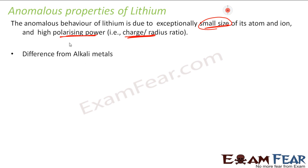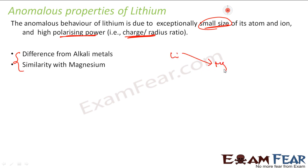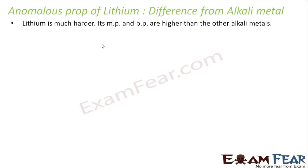So it has some different anomalous properties, and these anomalous properties are classified in two buckets. The first is the difference from alkali metals, and the second is the similarity to the magnesium element — that is the diagonal relationship. So lithium is in Group 1 and magnesium is in Group 2, and they have similar properties, while lithium also has different properties compared to alkali metals.